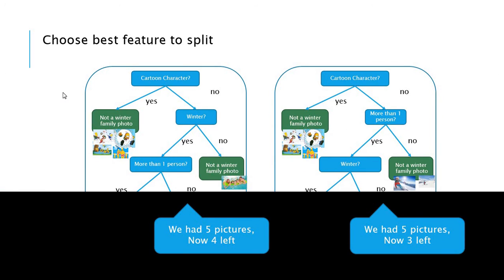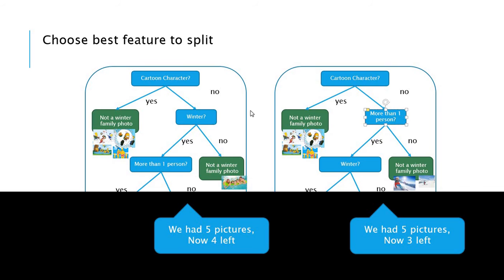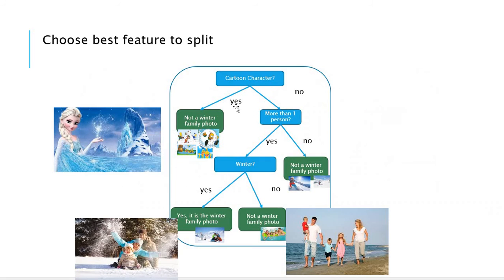Next, we need to split again using either winter or more than one person. Using the same concept — if we use winter, we split out one picture, and if we use more than one person, we split out two pictures. So more than one person is more effective than winter. The final decision tree order is: cartoon, then more than one person, then winter.